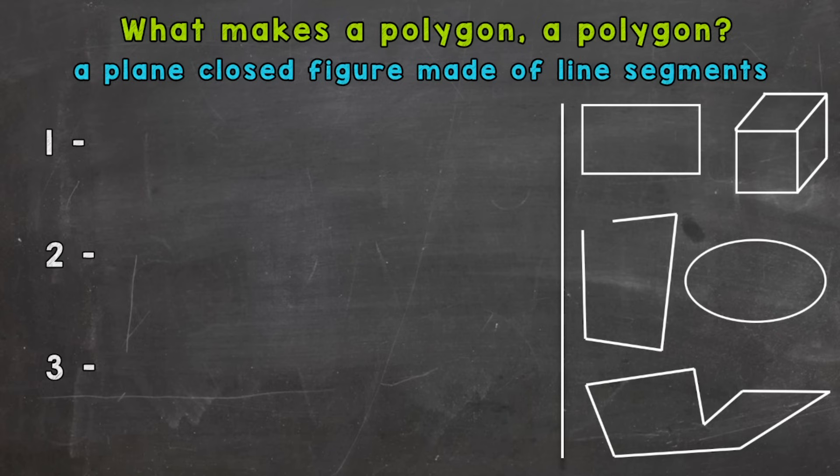The first characteristic or thing in our checklist: a plane figure or plane shape. That just means the figure or shape has to be flat. If it's three-dimensional like a cube, a pyramid, a rectangular prism, those are not polygons. Again, has to be flat.